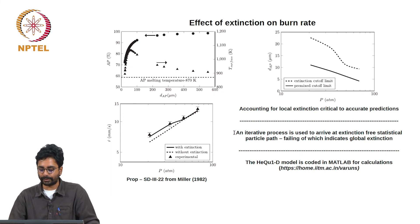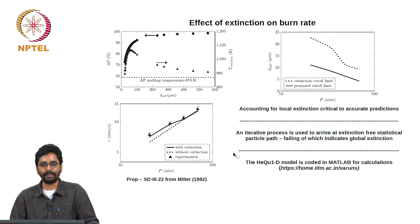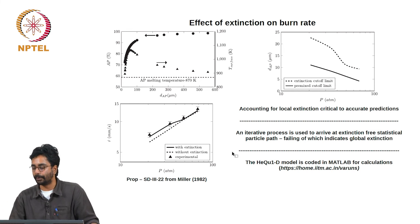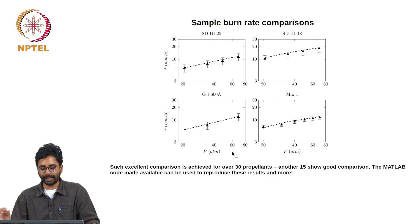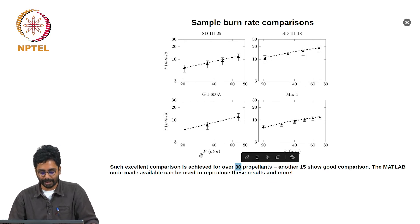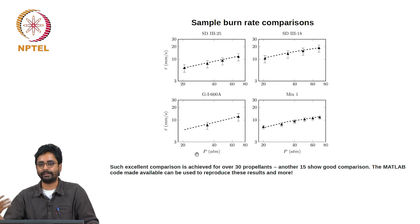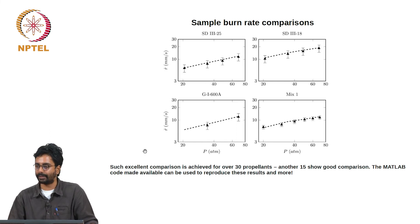An iterative process is used to arrive at an extinction-free statistical particle path — failing of which indicates global extinction. This whole theory is available in the form of a MATLAB code that anybody can use to make predictions for a variety of composite solid propellants. Predictions have been made for over 100 propellants of various kinds including aluminized ones with nitramines, variety of catalysts, and inhibitors. The predictions are reasonably good.